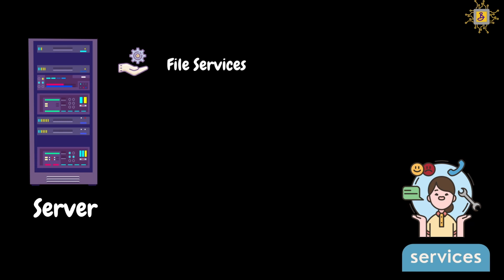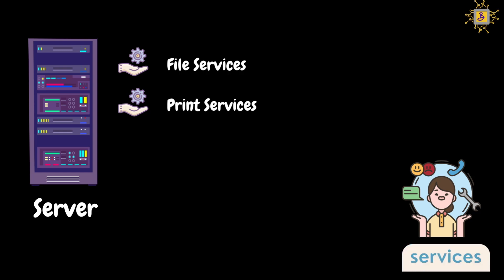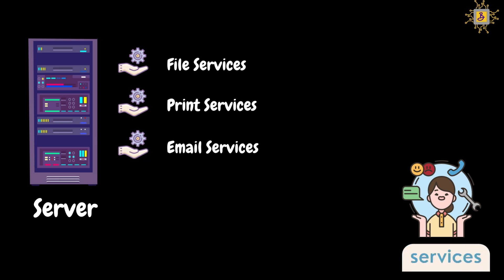File services: file servers can store files and make them accessible to clients over a network. It makes the process easy for multiple clients to access the shared data. Next, print services: servers can manage and distribute print jobs to network-connected printers. In an organization, we will have a centralized printer, and this print server will allow users to print documents from their devices. Next, email services: servers can handle email storage, sending, receiving, and forwarding messages for clients in an organization.